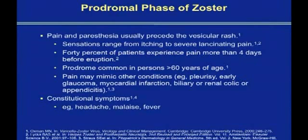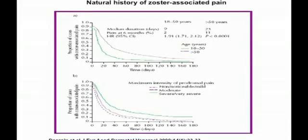The prodromal phase of zoster — why do I emphasize this? It can be very severe, and the severity of the pain is an indicator of the likelihood of post-herpetic neuralgia. We can see the median duration of pain, and if we look at the maximum intensity of pain, if you have a severe prodromal, then you are more likely to have post-herpetic neuralgia, and particularly severe post-herpetic neuralgia. Apart from patients being older, if they have a severe prodrome, be aware that they may actually get post-herpetic neuralgia.